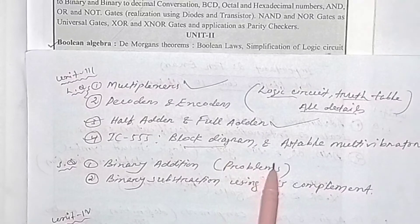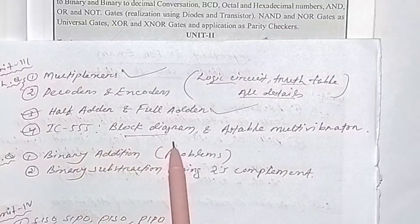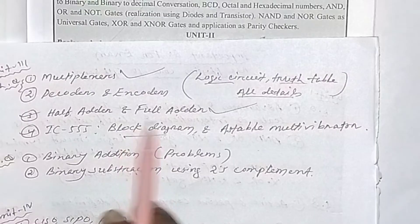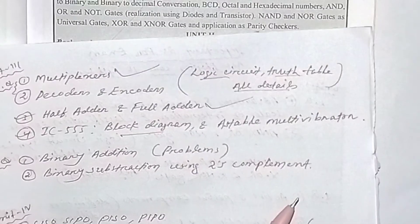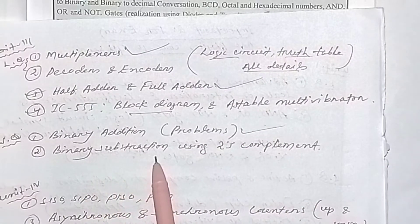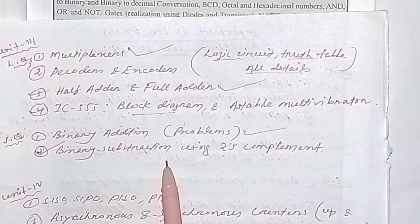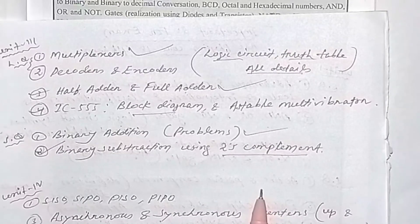The third chapter covers the astable multivibrator — prepare those details. For short questions: binary addition problems and binary subtraction using 2's complement are important — know the method and examples.